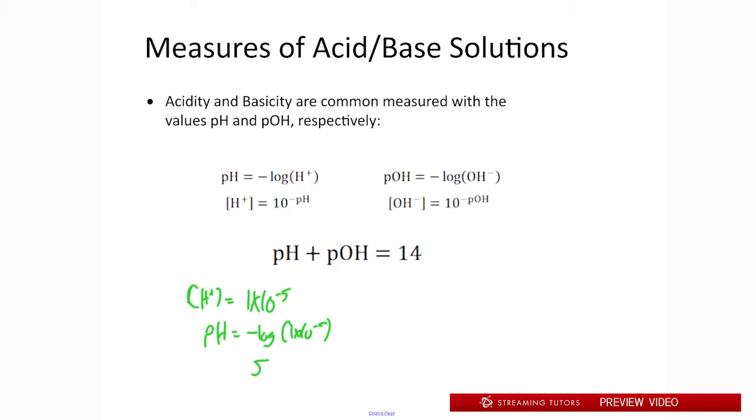So pH and pOH are on a logarithmic scale, meaning that a factor of magnitude, let's say we turn this into 1 times 10 to the negative 6, the new pH would simply be 6. So that means we decreased H+ concentration tenfold and got a pH increase of 1. That's how that logarithmic relationship works. You can look at the numbers there and play with it to explore that further.